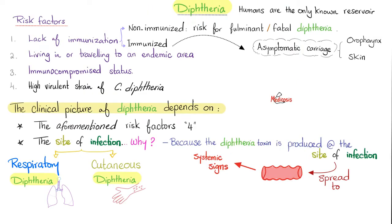Risk factors for diphtheria infection include lack of immunization, living or traveling to an endemic area, being immunocompromised, and being exposed to a highly virulent strain. If you are immunized and diphtheria affects you, it will be an asymptomatic or very mild state — you become an asymptomatic carrier who can transmit diphtheria to an unimmunized person. If you're not immunized, you risk severe, fulminant, or fatal diphtherial disease.